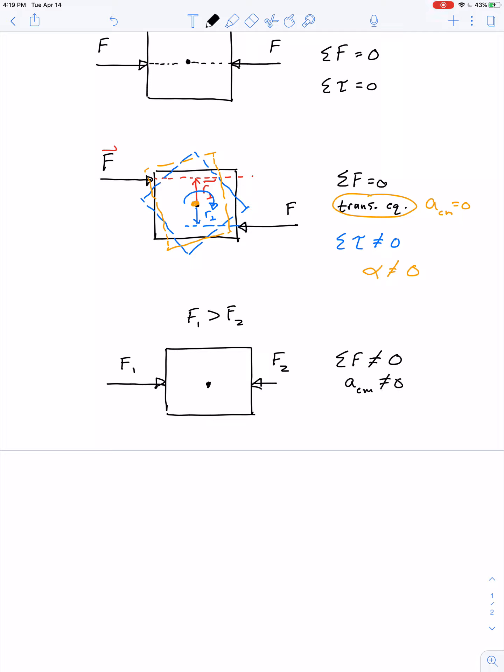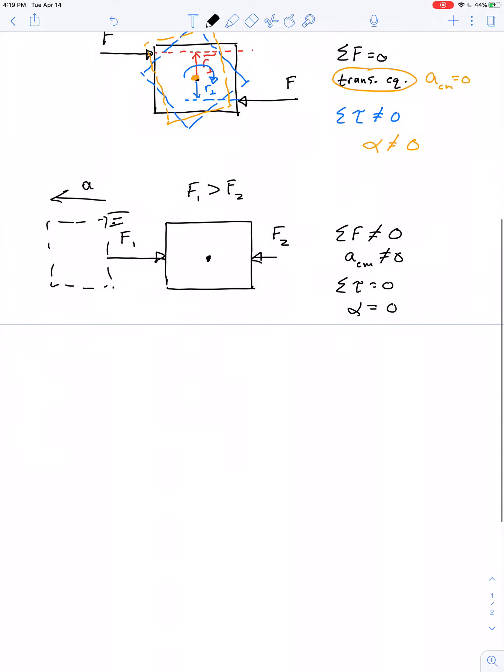And so there is some acceleration of the center of mass. And so this object is going to translate through space, right? The object is going to move, not just with some velocity, but with some acceleration to the left. But the net torque, as you can see, would be equal to zero in this case. And so there would be no rotation for this object. So this is an example of rotational equilibrium, but not translational equilibrium.